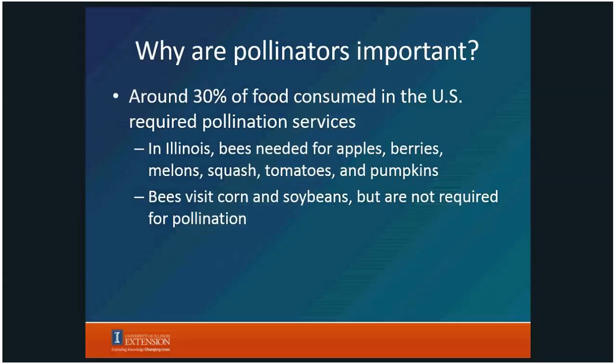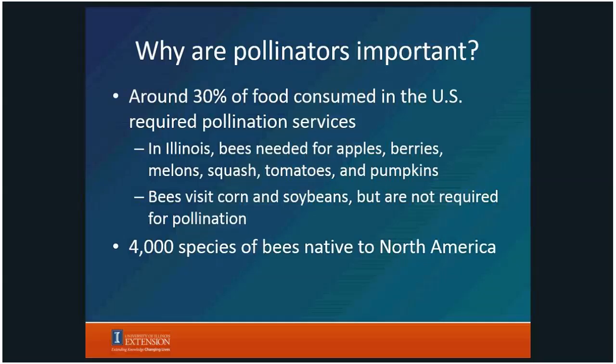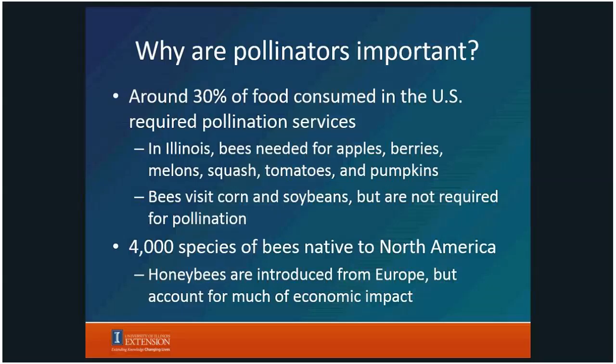Bees do visit corn and soybeans, but they are not required for pollination — corn is wind pollinated and soybeans are self-pollinated. So the vast majority of our agricultural landscape in Illinois is covered by crops that don't necessarily require or support our pollinator populations. We do have 4,000 species of bees native to North America — leaf cutters, orchards, masons, sweat bees — but honeybees are actually introduced from Europe, and they account for a good portion of the economic impact of pollinators in the United States.